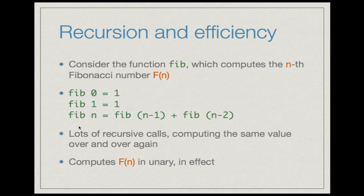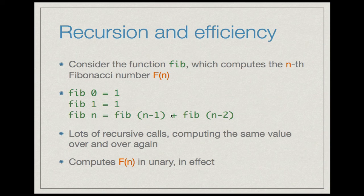For instance, fib(3) makes two calls: one to fib(2) and another to fib(1). fib(2) in turn makes a recursive call to fib(1) and fib(0). So you see that fib(1) is being called twice. If you consider a call like fib(5), there are even more calls to fib(1) which in effect recomputes the same value again and again.